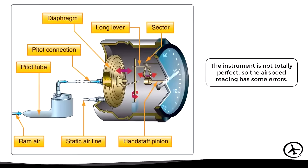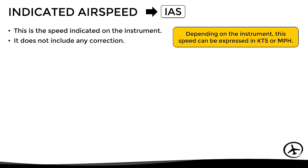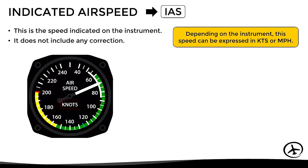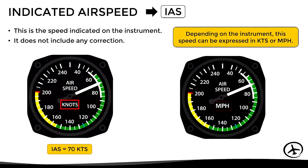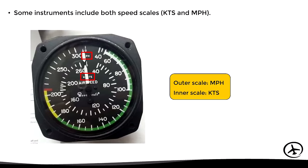The instrument is not totally perfect, so the airspeed indication has some errors. That's why we have different speed terms and definitions in aviation, each corrected for certain errors. The simplest is the indicated airspeed, abbreviated as IAS — the speed indicated on the instrument, not corrected for any type of error. It can be expressed in knots or miles per hour. Some instruments include both scales, with the outer scale in miles per hour and the inner scale in knots.